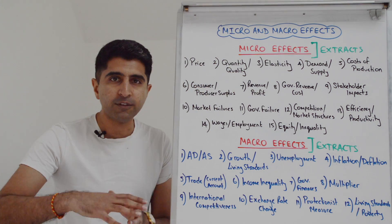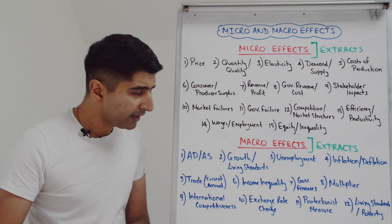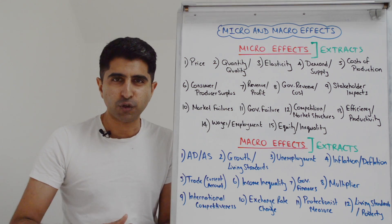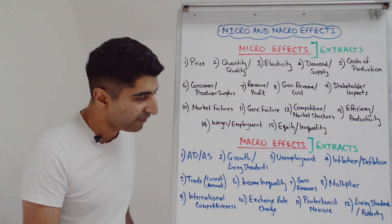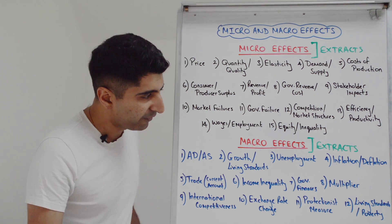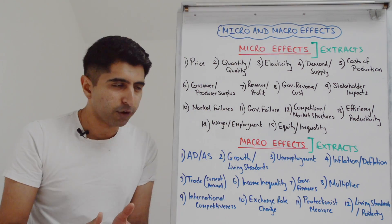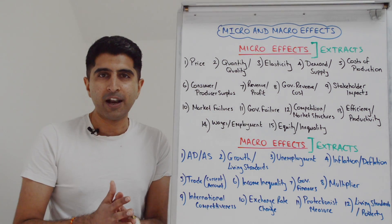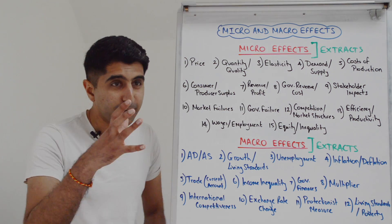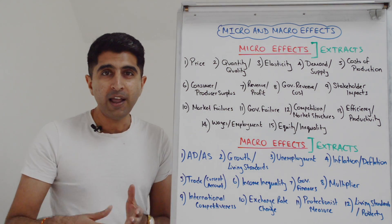The last few things you studied in year two macro — the international economy part. Anything that results in a change in international competitiveness of the economy, or more specifically of a country's exports, is a macro effect. Anything that results in an exchange rate change or the implementation of a protectionist measure is a macro effect. Anything that leads to a change in living standards or poverty — specifically linking to development economics, development policy, or something else in that area — is going to be a macro effect because you studied it in macro. If you studied it in macro, it's a macro effect. If you studied it in micro, it's a micro effect.